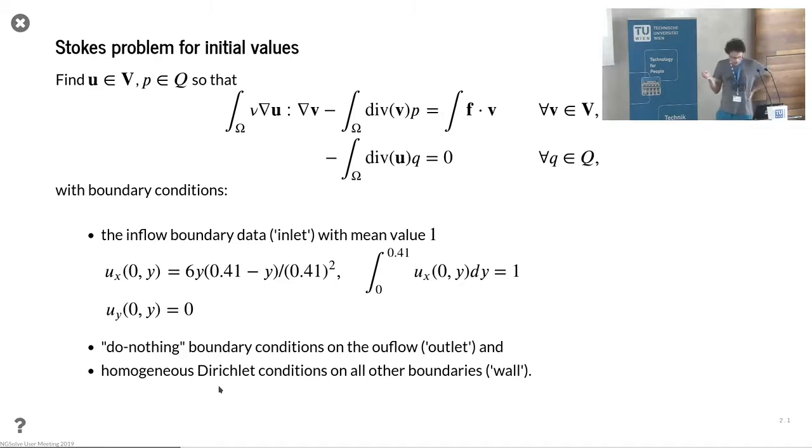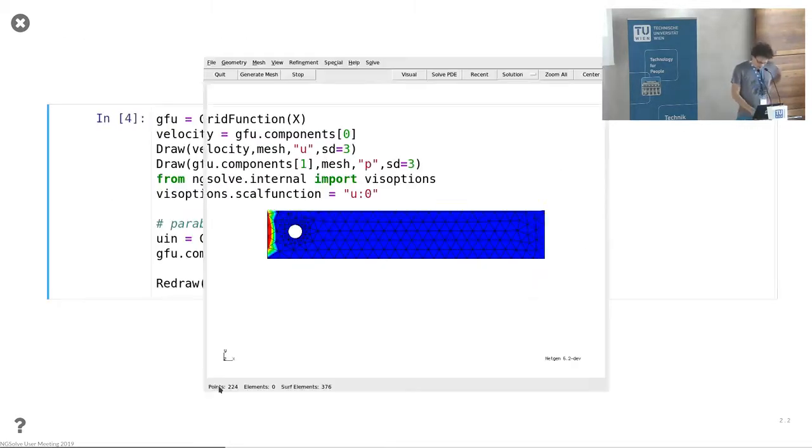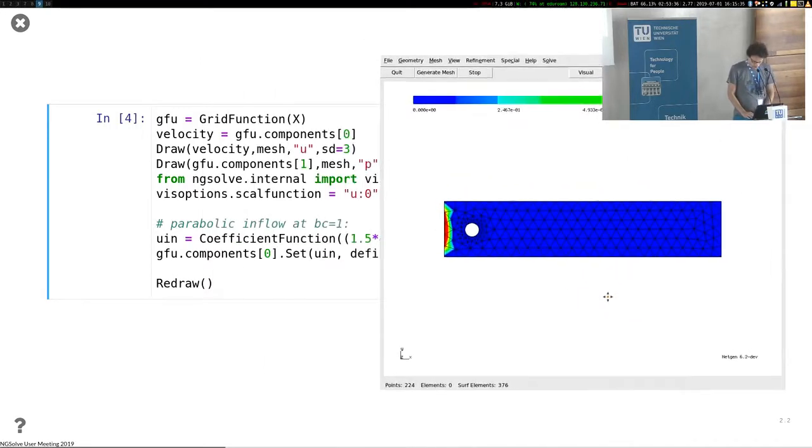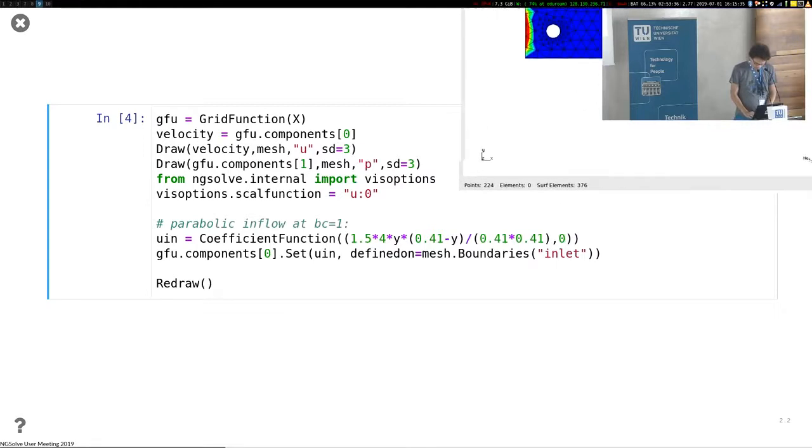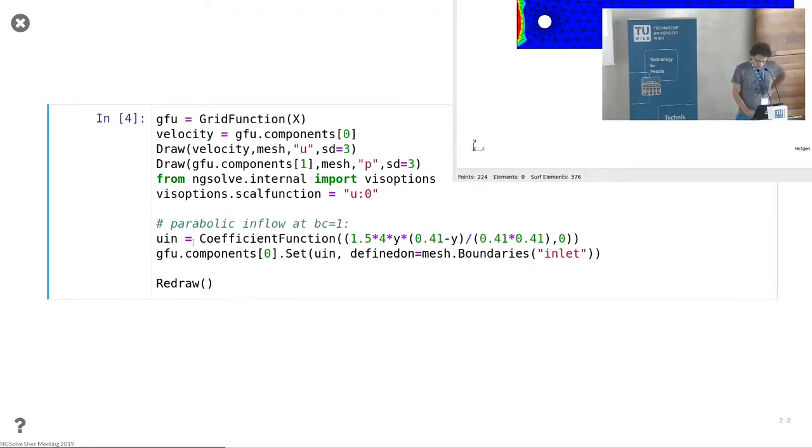So as initial value for the problem, we solved what we saw in the other tutorial already. We just solved the Stokes problem with the proper inflow profile, so this is just a little bit more extensive than what we have seen in the other tutorial, but it's the same result. So let's just do it. We set the boundary conditions here. We have a coefficient function u_in, and we set the grid function component 0. So that means the vector H1 part of the product space.